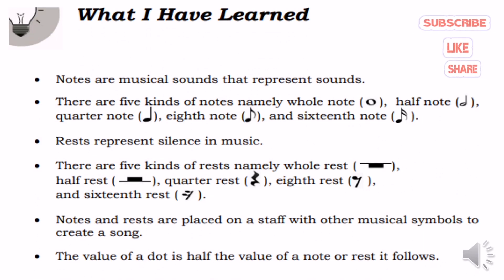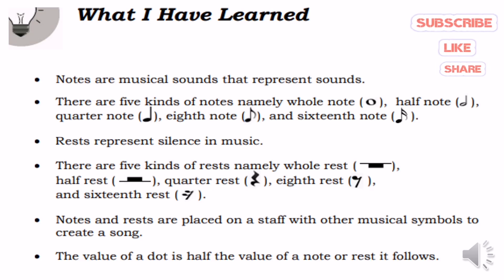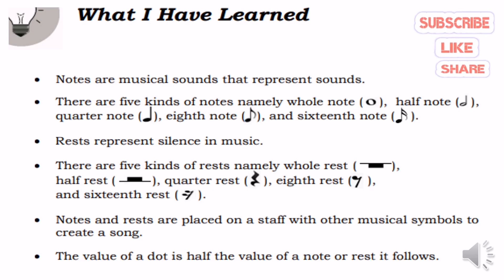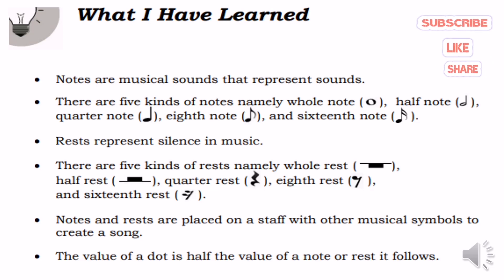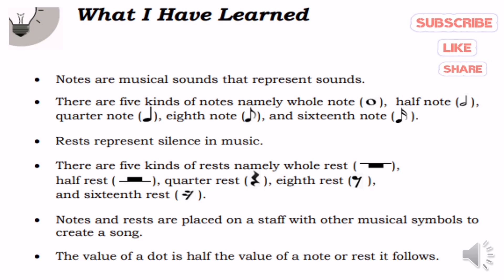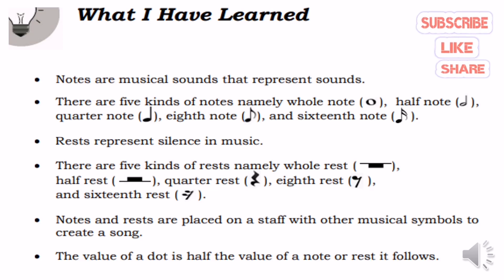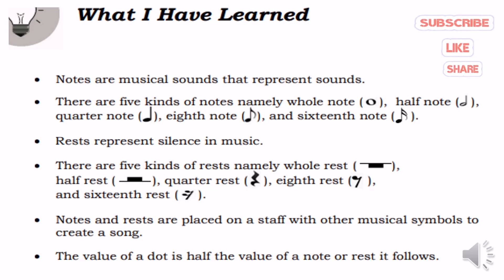What you have learned: Notes are musical symbols that represent sounds, and there are five kinds of notes — whole note, half note, quarter note, eighth note, and sixteenth note. Rest represent silence in music, and there are five kinds of rest — whole rest, half rest, quarter rest, eighth rest, and sixteenth rest. Notes and rest are placed on a musical staff with other musical symbols to create a song. The value of a dot is half the value of the note or rest it follows.